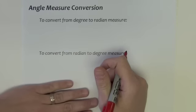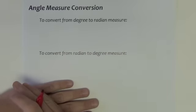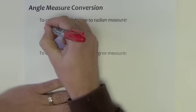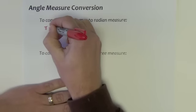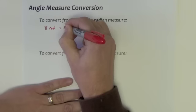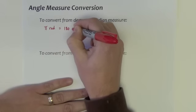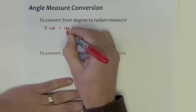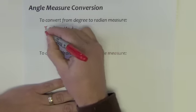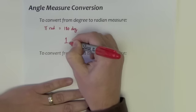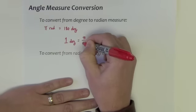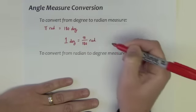Angle measure conversion — how do we get from one unit of measurement to another? We can start with the fact that pi radians is equal to 180 degrees. If we use some algebra and divide both sides by 180, we get the equivalent form: one degree is equal to pi divided by 180 radians.